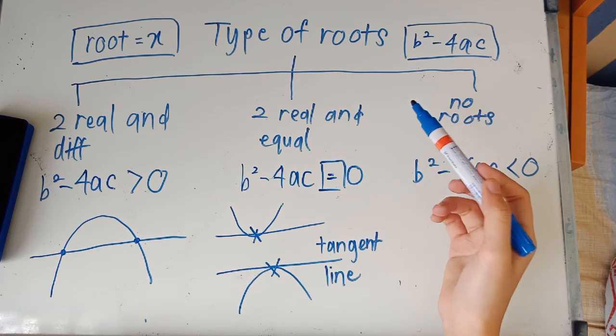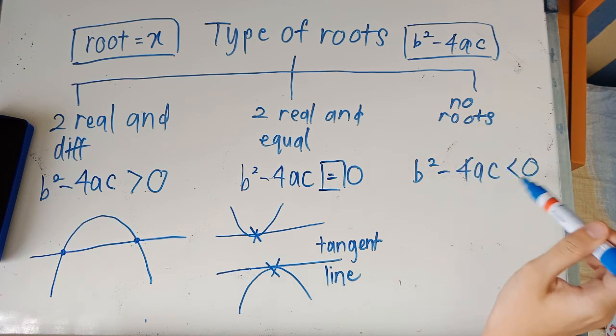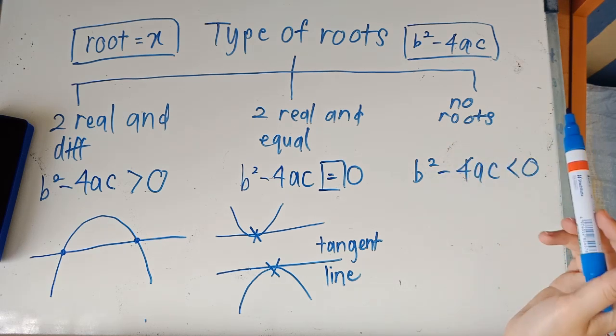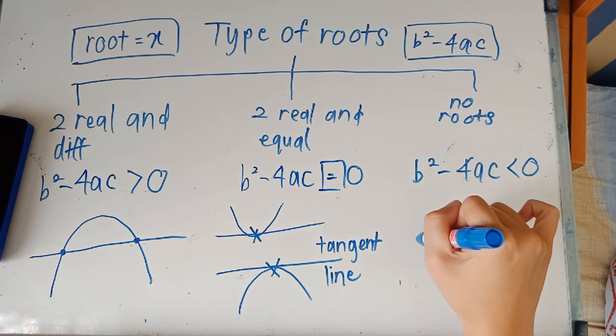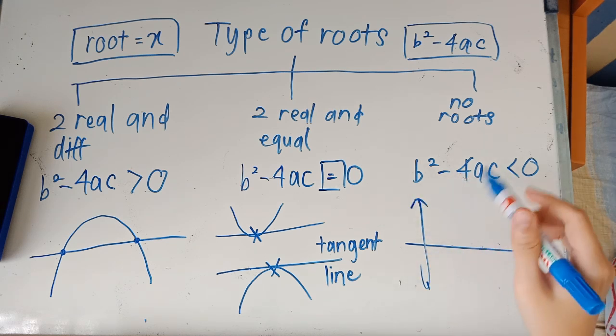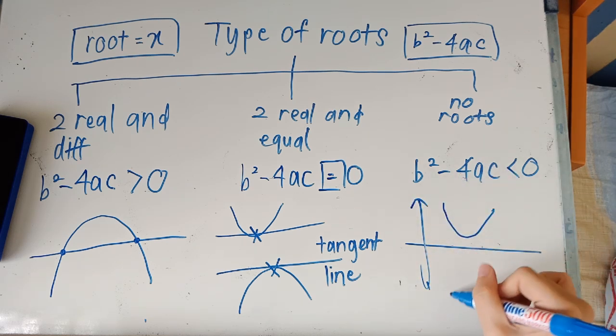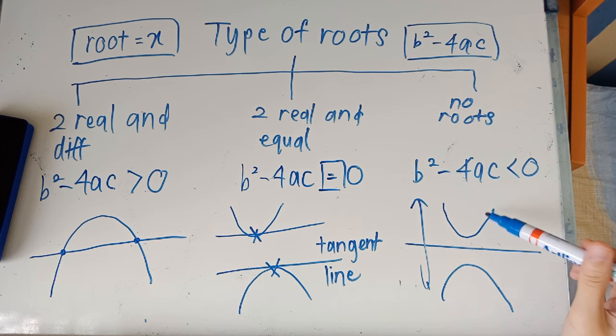The last thing that we want to remember here is no roots. B square minus 4ac will be smaller than zero. And for these, the graph does not intersect the x axis at all. So this will be your x axis. And your graph might be here or here. The key is that it does not touch the x axis at all. So this will be no roots.